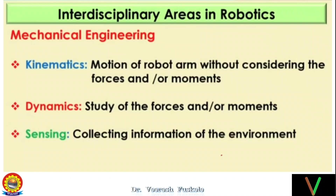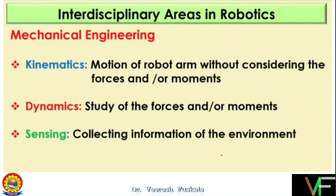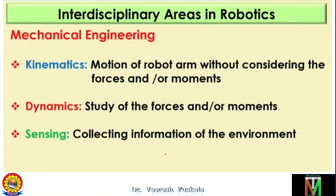Are position and orientation the same thing or different? Suppose you have a human hand and there is an object. The robotic arm can reach a position, but the orientation of the object at the same position can be different. If the orientation requires a twist of the wrist, we have to adjust accordingly. So depending on the orientation, the kinematics of the robotic arm is decided. Both position and orientation are required.